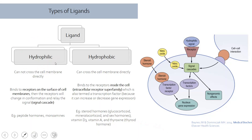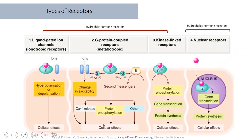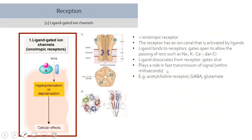Hydrophilic hormones, which do not like fat but like water, cannot pass directly through the membrane like steroid hormones. They require a receptor on the cell surface — usually a protein — to catch the signal. When the hydrophilic signal binds the receptor, the receptor creates signal cascades reaching target organelles. This is the case with peptide hormones and amines. For hydrophobic ligands, only one receptor type is needed: the nuclear receptor. For hydrophilic ligands, three receptor types can be used: the ligand-gated ion channel, the GPCR, or the kinase-linked receptor.